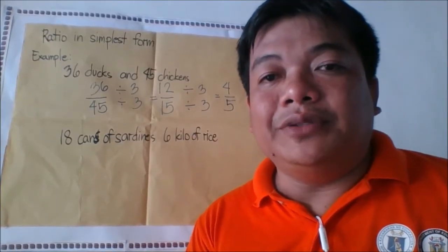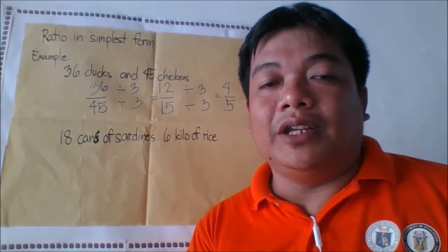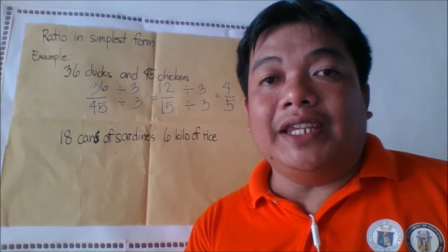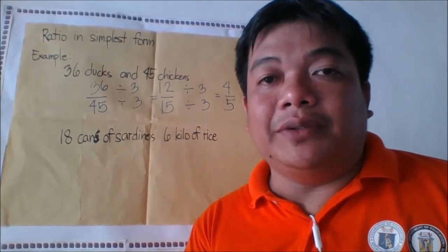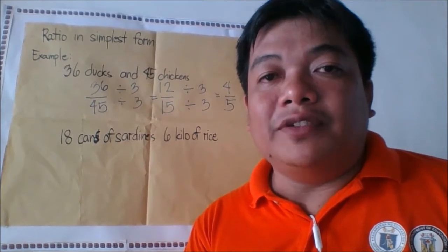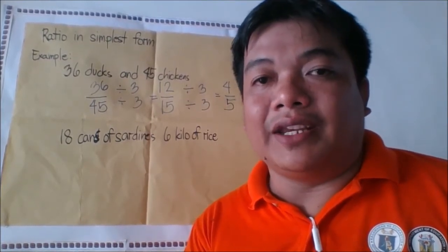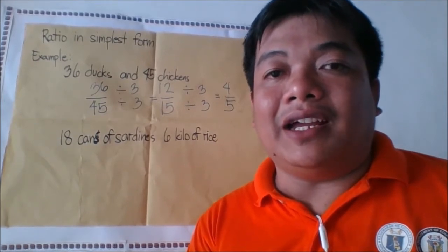A ratio can be expressed in simplest form just like a fraction. We can say that a ratio is in the simplest form when the common factor of the terms is only one. Now let us try this example.